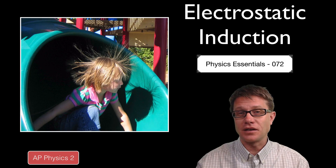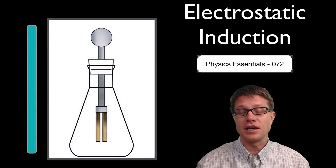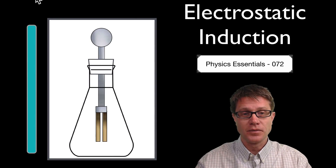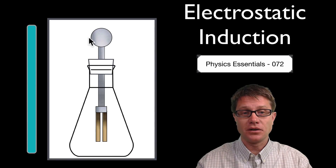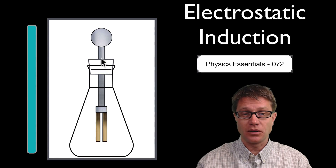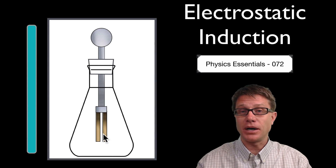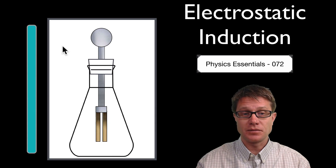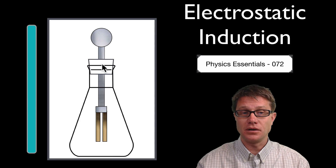A good way to study this in the science lab is to use something called an electroscope. What we have is a metal ball at the top connected to a metal rod that goes through the middle, and then we have metal leaves on the bottom.